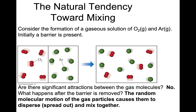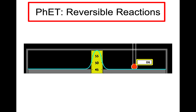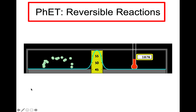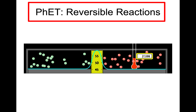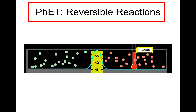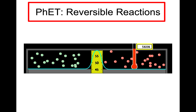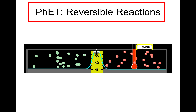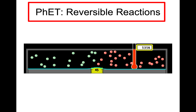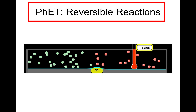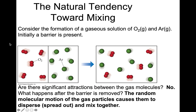We've already been looking at the behavior of ideal gases. I'd say there are not significant attractions between the gas molecules. What happens after the barrier is removed? They just disperse — they spread out upon mixing and move into both chambers. The PhET sim on reversible reactions is one I use to illustrate this, and I also use it when discussing entropy later on. This is a beginning to introduce what takes place involving the entropy change — the dispersal, the spreading out of the particles into both sides of the container. That's what's described here as a natural tendency towards mixing.